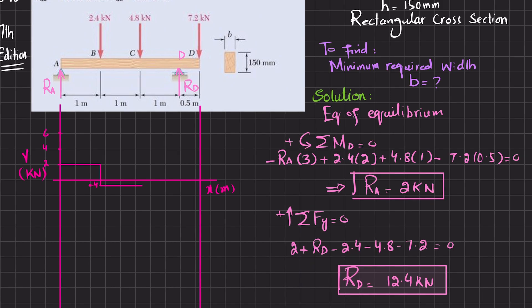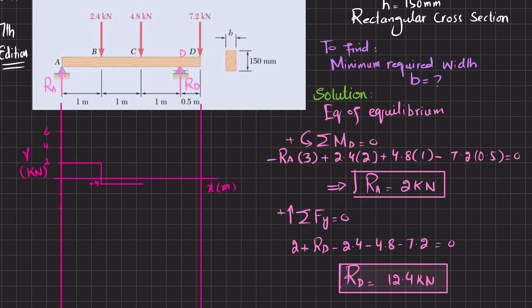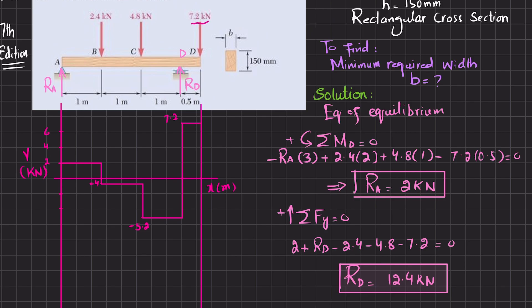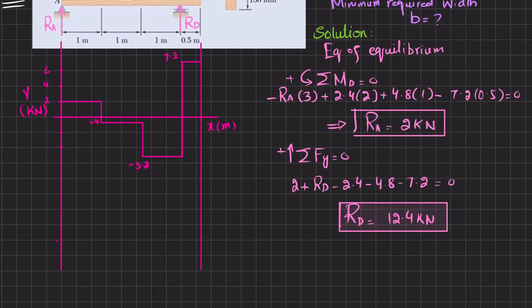At point C, a load of 4.8 kN acts, so −0.4 − 4.8 = −5.2 kN. From C to D the shear force remains at −5.2 kN. At point D, the reaction Rd = 12.4 kN acts, so −5.2 + 12.4 = 7.2 kN. Then from D to the end, a load of −7.2 kN brings the shear force back to zero.